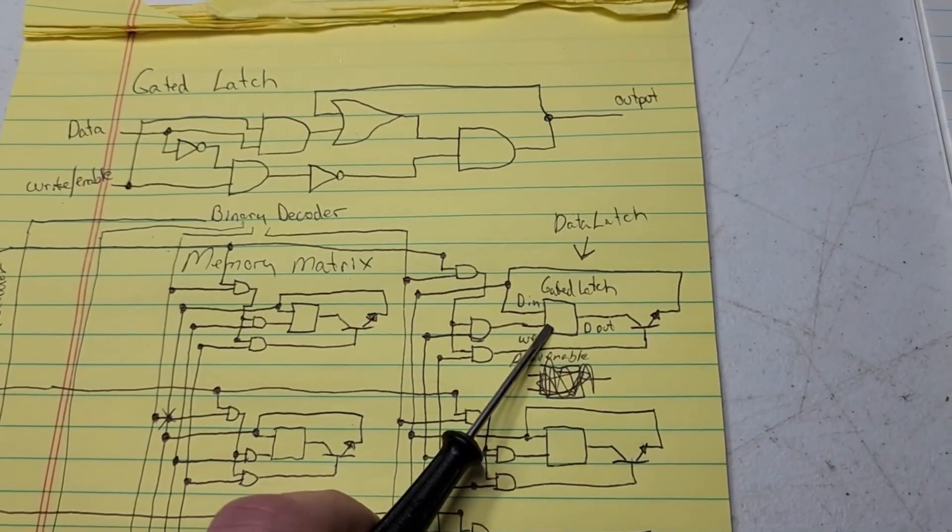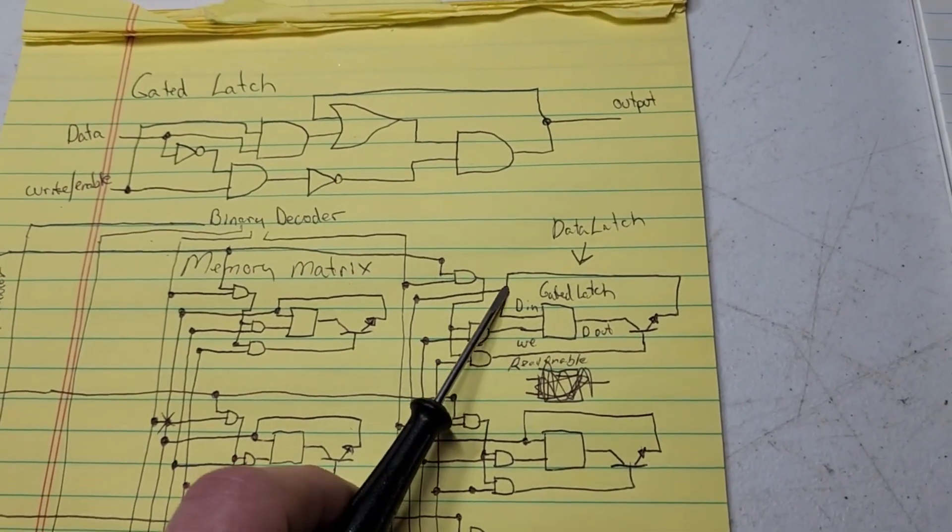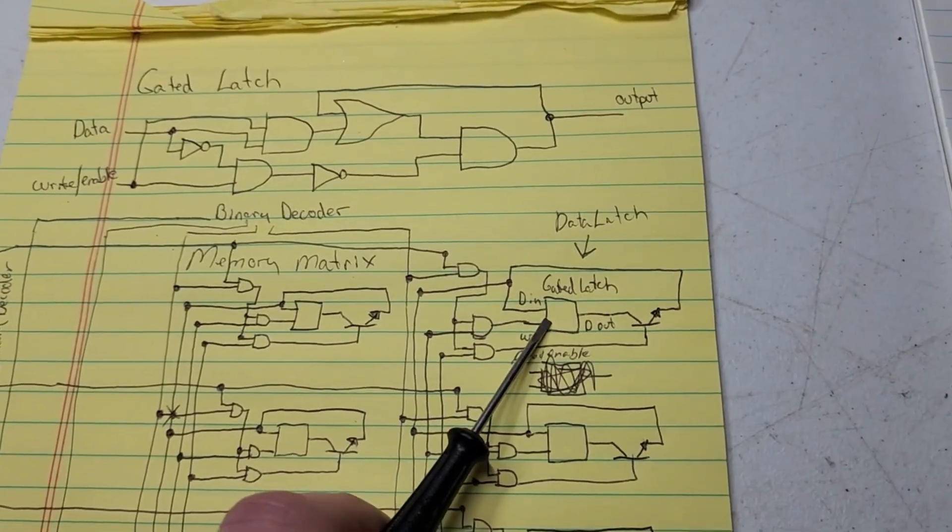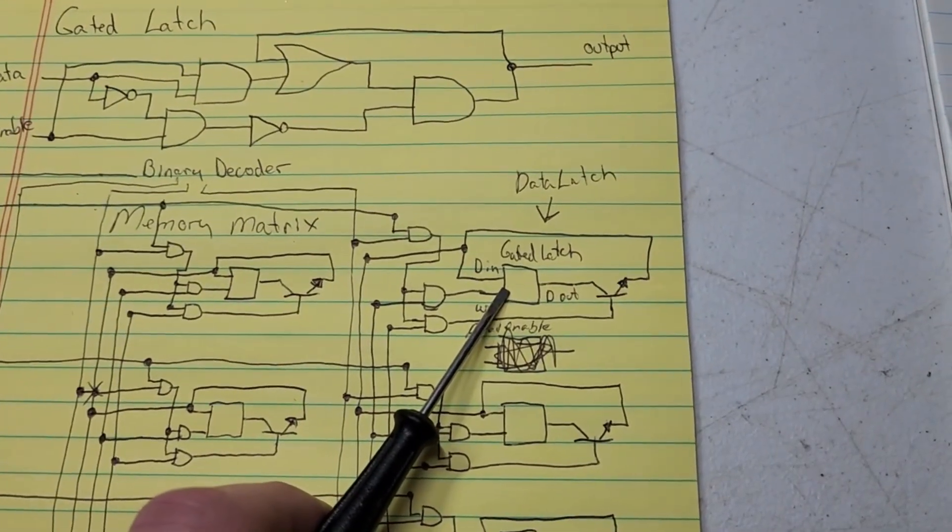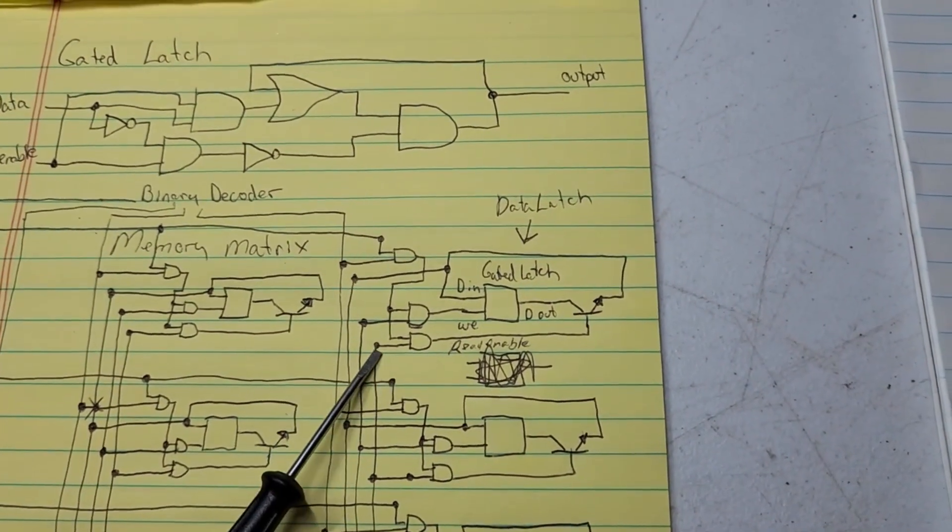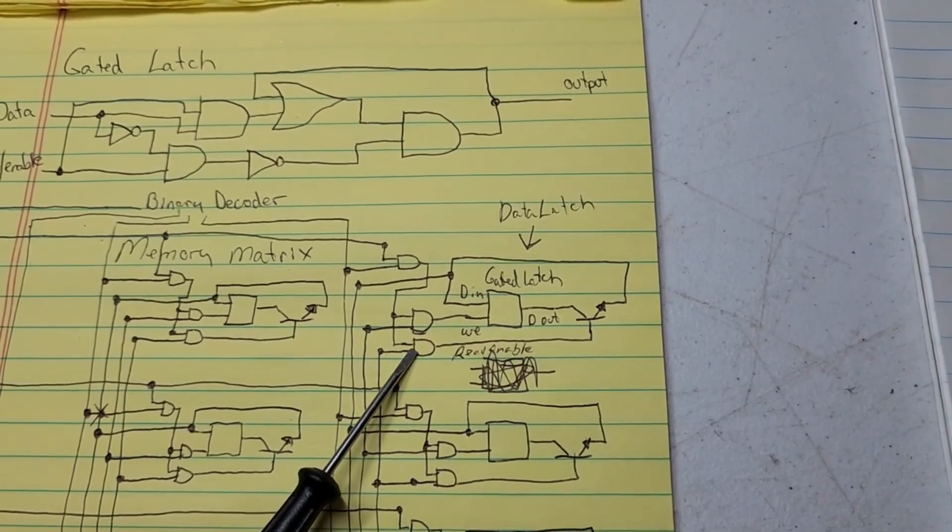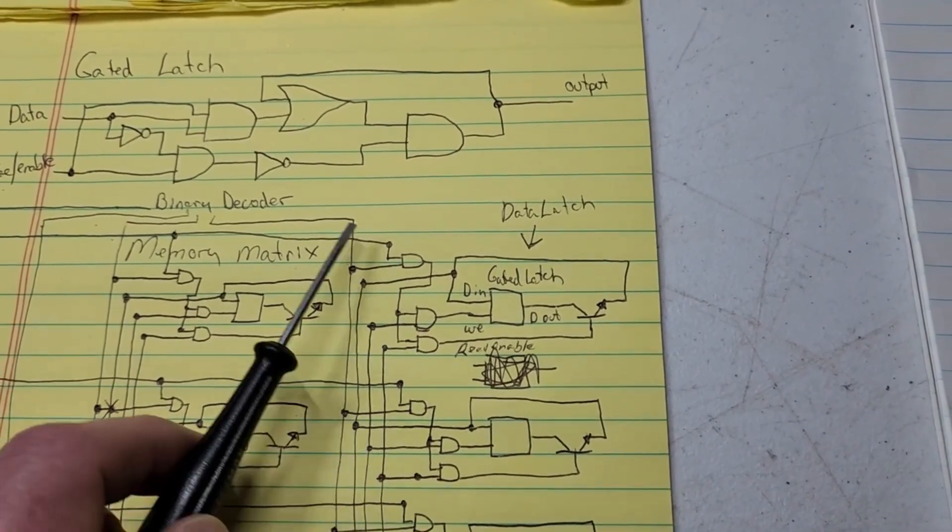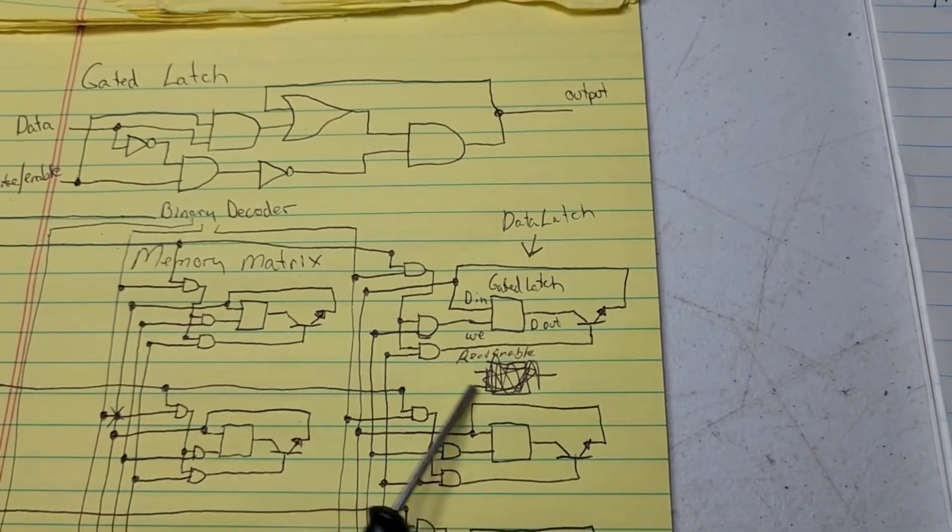Because my write enable, if you follow that, that sounded really confusing. If my read enable is active and I'm choosing this chip, this bit of memory, and my read, then I'll read what's there.